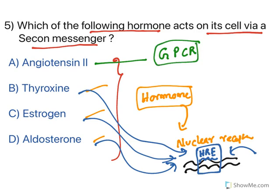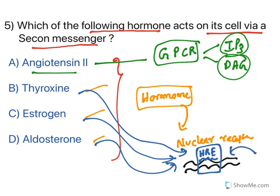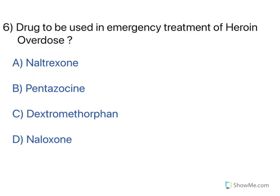Angiotensin 2 acts on a G protein-coupled receptor, releasing inositol triphosphate (IP3) and diacylglycerol (DAG) — these are second messengers. So the effects of angiotensin 2 are mediated by second messengers like IP3 and DAG. Therefore option A is the correct answer.